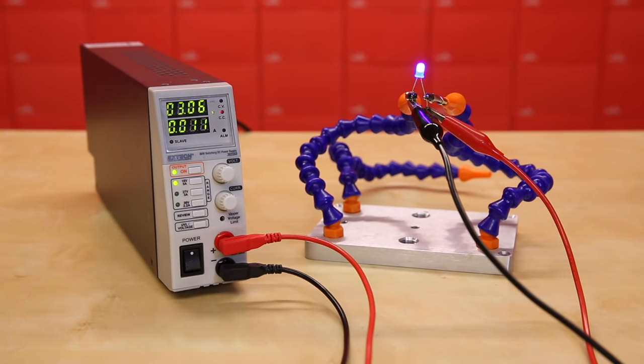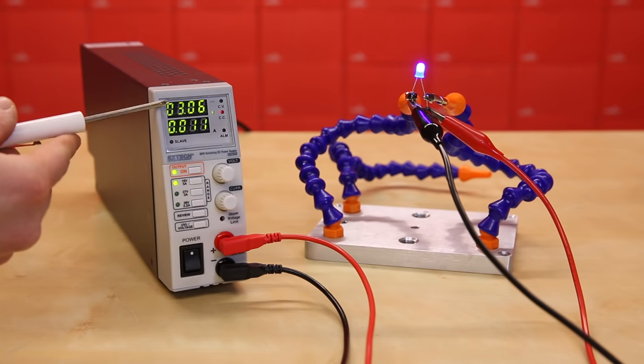To act as a constant current source, you'll see that the voltage drops from our set 4 volts to around 3 volts, which is the forward voltage required to pass 10 milliamps of current through the LED.